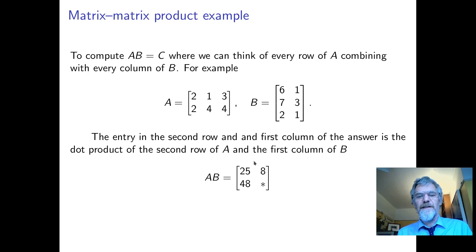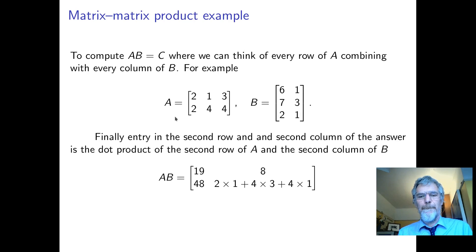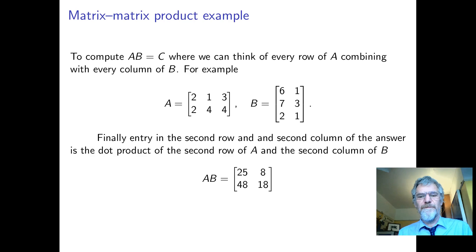And then finally, to get the thing that's in the second row and second column, we get the second row of A and dot product with the second column of B, like that. Four times one, two times three, four times one. And that's how we do a matrix product.